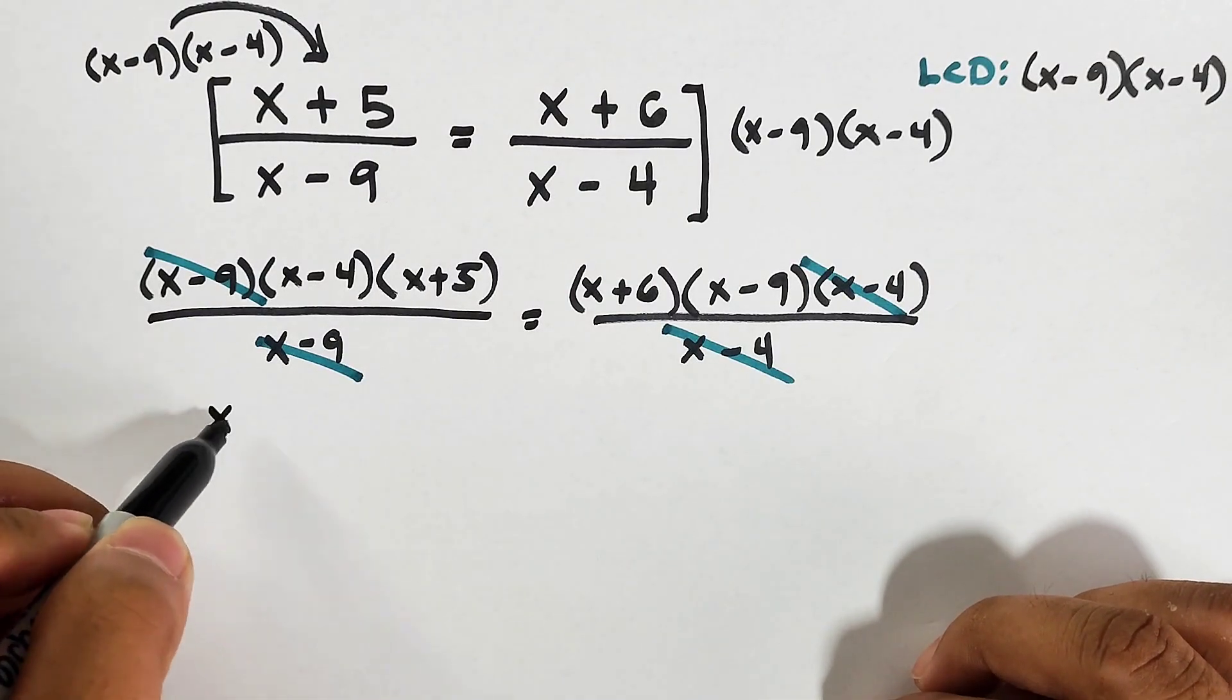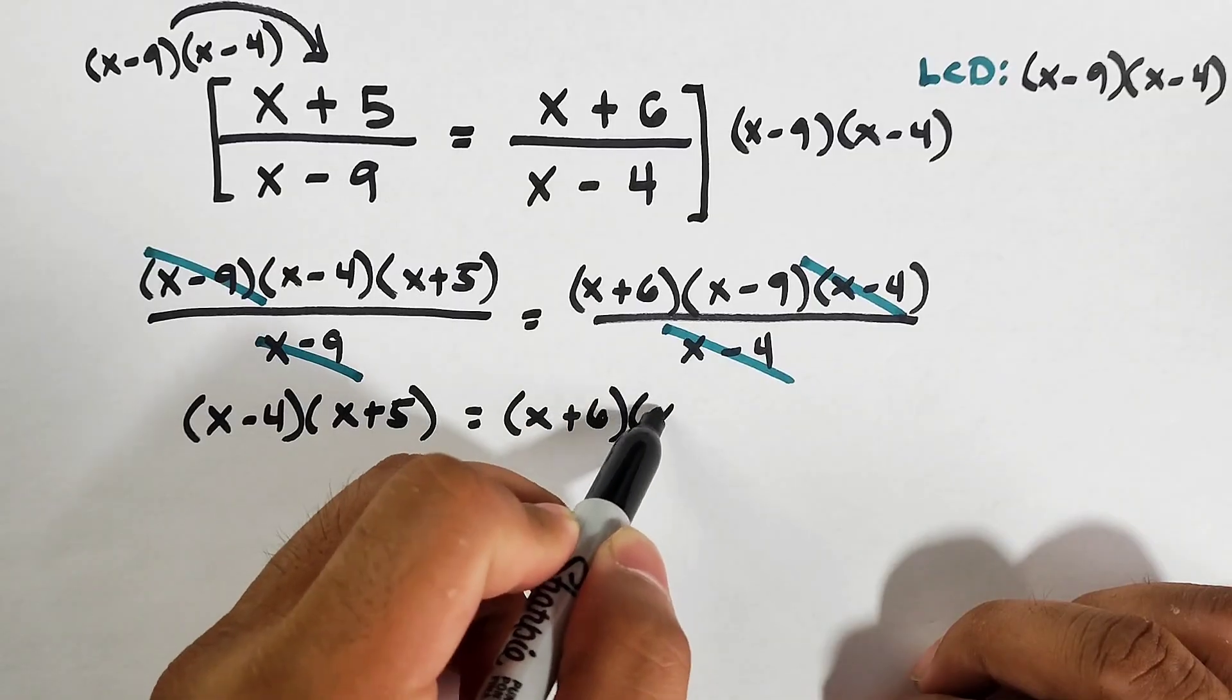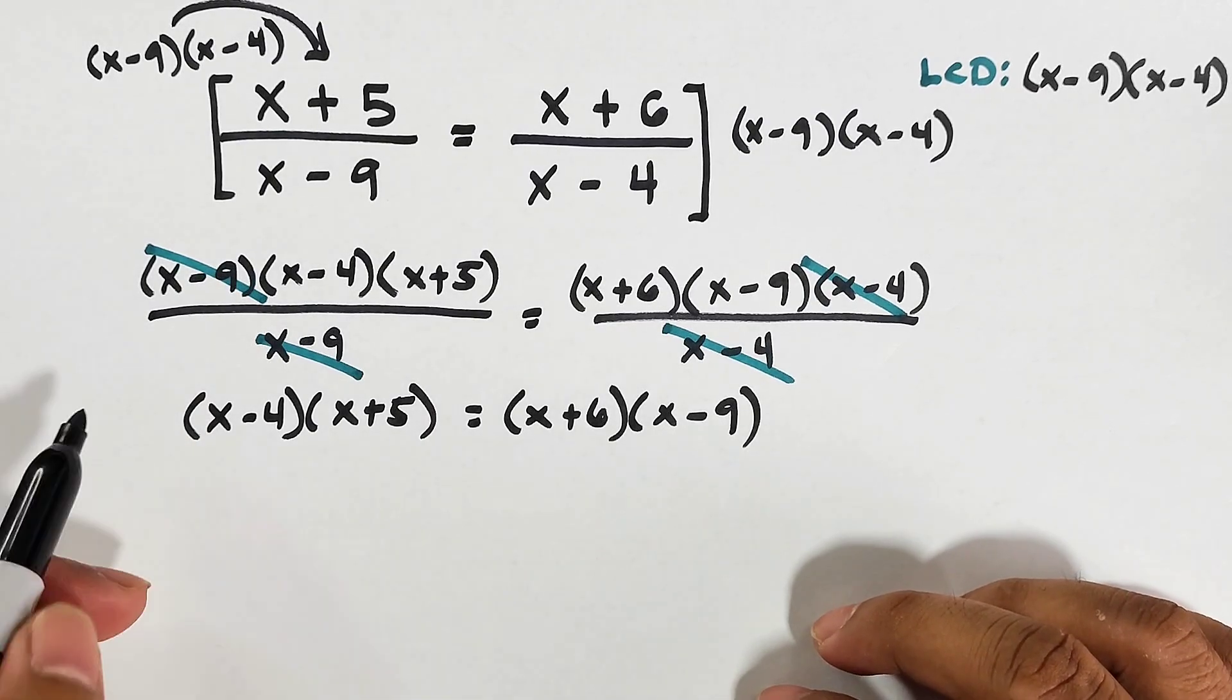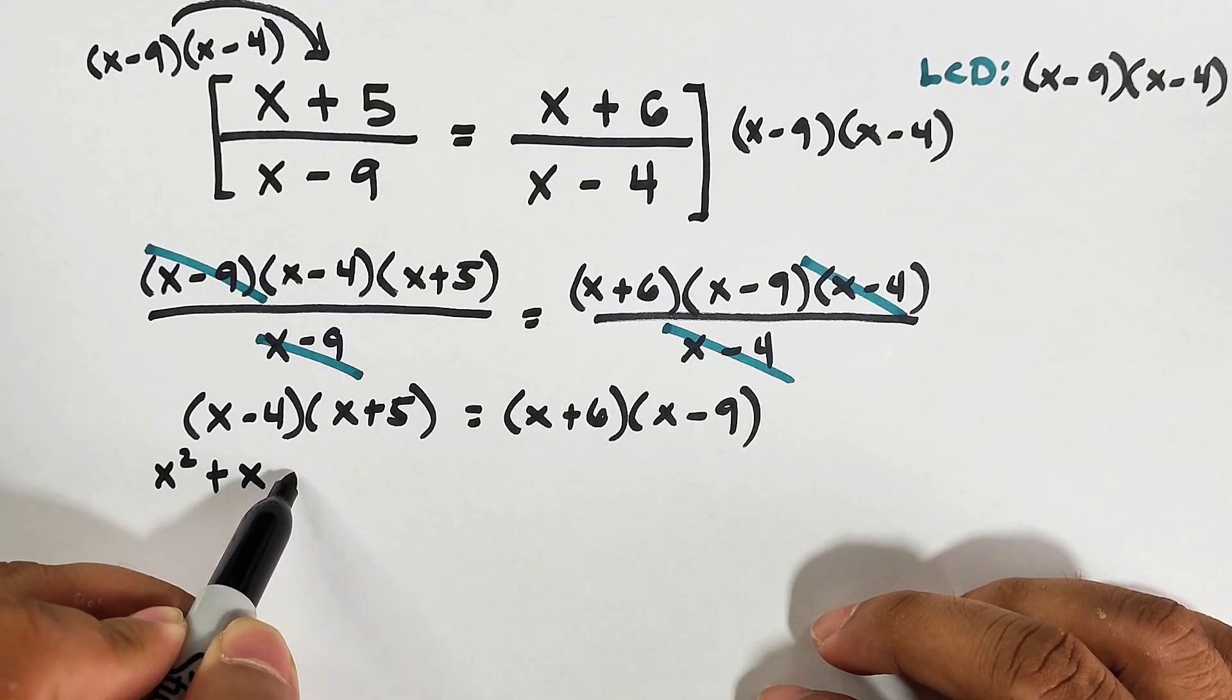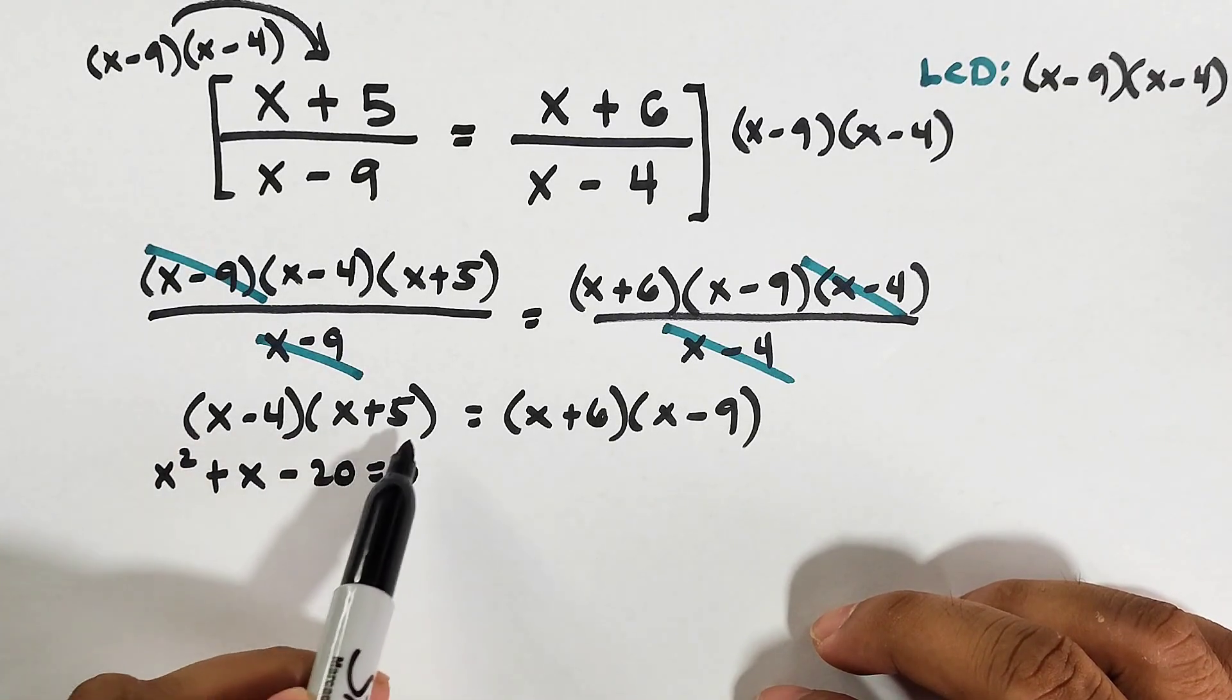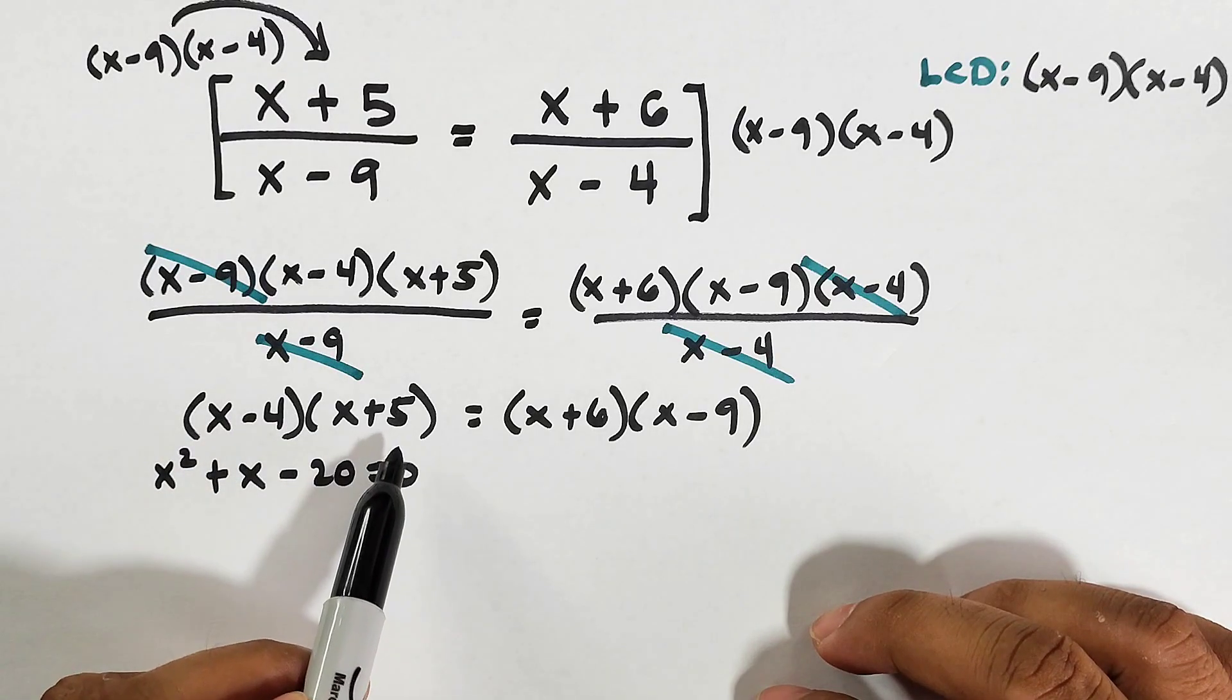So what we have now is x minus 4 times x plus 5 equals x plus 6 times x minus 9. You can use the FOIL method. This is x squared plus x minus 20. When we take x times x, that's x squared. x times 5 is 5x. Negative 4 times x is negative 4x. So 5x minus 4x is x. Negative 4 times 5 is negative 20.